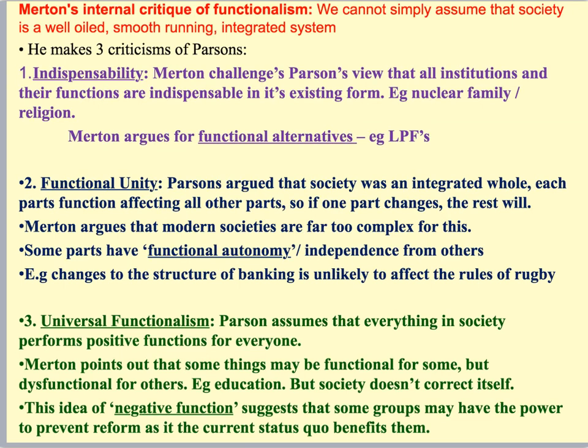Merton said that actually not all institutions are indispensable. For example, he said the nuclear family and religion — Parsons argued those were the best types of institution to provide socialisation and social control. But Merton argued we could use what's called a functional alternative. Lone parent families can provide exactly the same types of functions for children as a nuclear family. In that sense, traditional functionalism needs to be a little bit more flexible in its ideas about what institutions should or shouldn't look like.